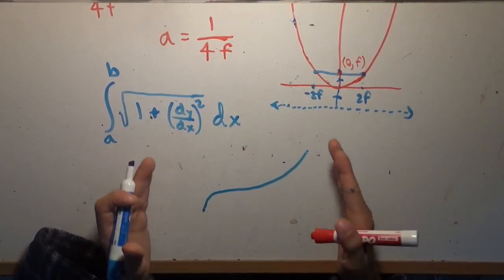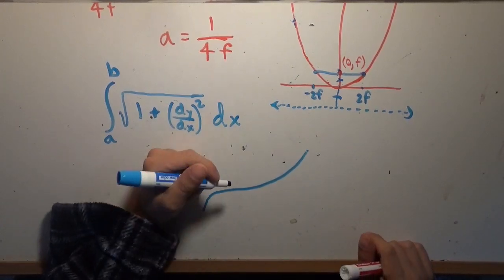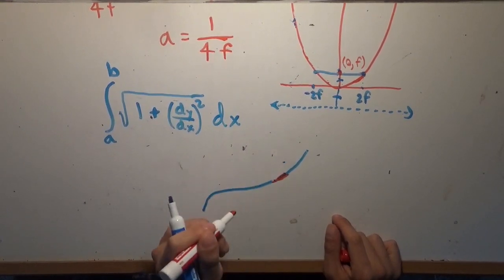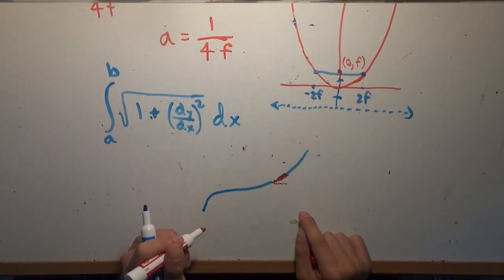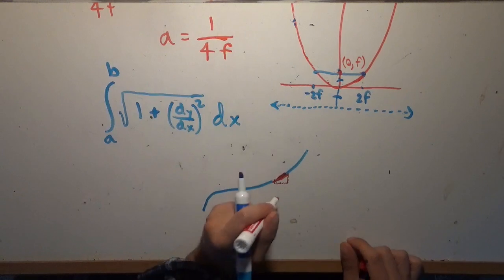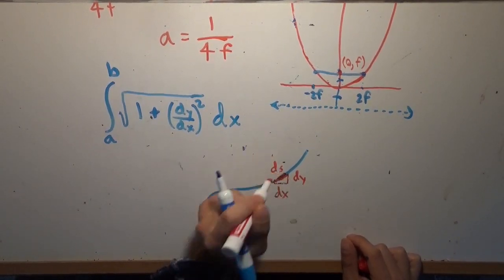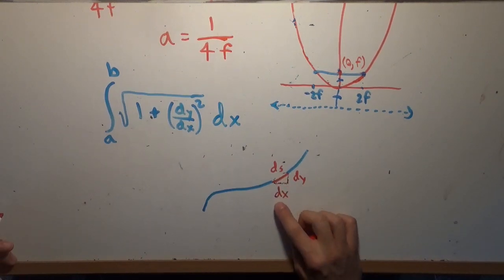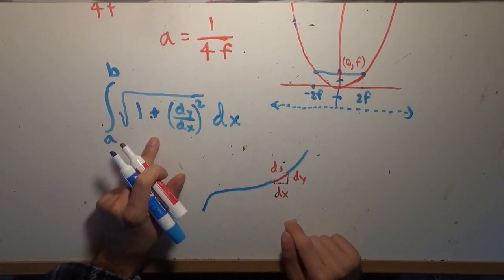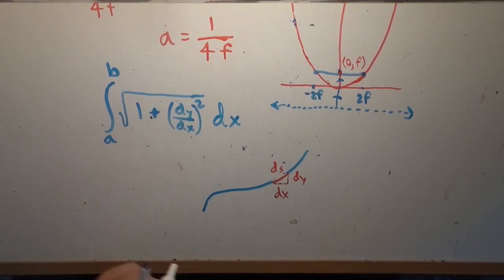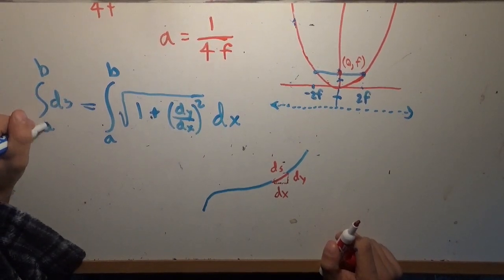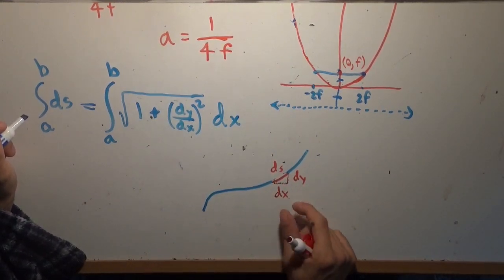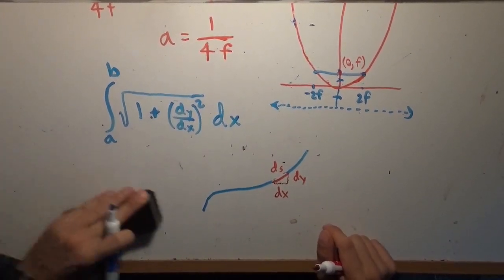Where does this come from? If you zoom into some tiny section of a curve, you can approximate it with a tiny line segment. We take dx as the change in x, dy as the change in y, and treat it as a right triangle — dx along the bottom, dy on the side, and ds as the hypotenuse. Applying the Pythagorean theorem gives ds equals the square root of dx squared plus dy squared, which is exactly the arc length integrand. So the arc length is simply the integral of ds.